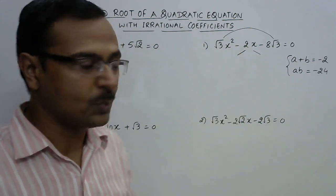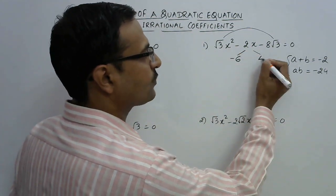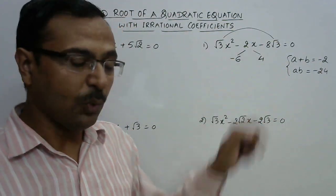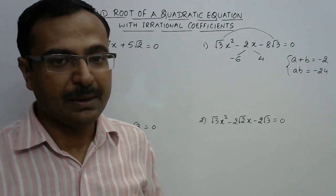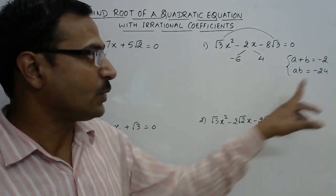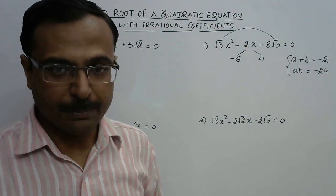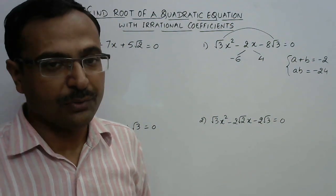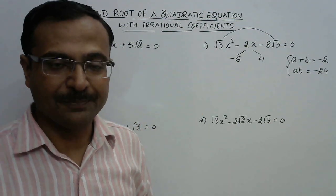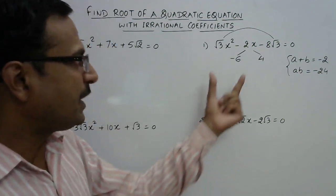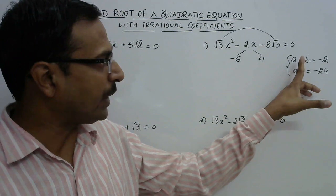We need the sum as minus 2, so it has to be minus 6 and plus 4, because adding minus 6 and 4 gives minus 2, and the product of minus 6 and 4 gives minus 24. So I have identified the two numbers required. Once you split the middle term taking into account the sum and product of these two factors, the second step is to change the sign of those two numbers.